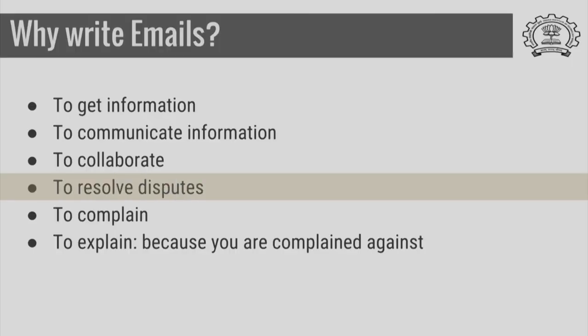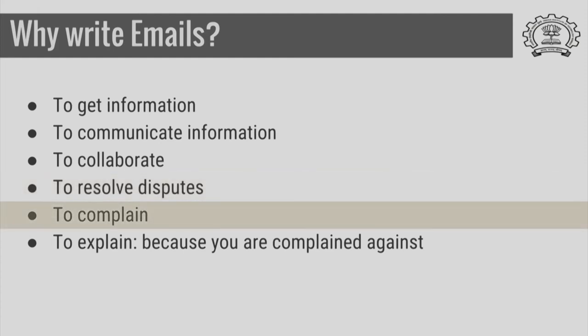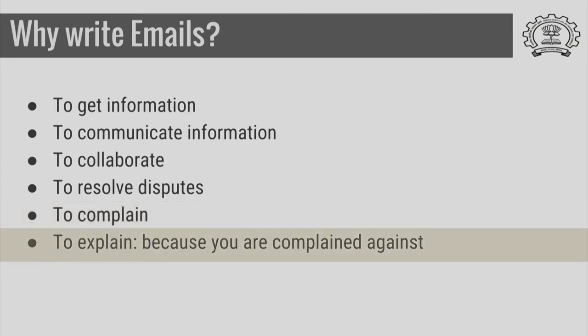Sometimes you write to resolve disputes. Somebody is unhappy about something and you are trying to resolve the issue; somebody might be writing to complain to you and you are responding to a complaint. It becomes harder and harder to write emails that involve resolving disputes, complaining, or explaining when a complaint is against you. It is of course easier to write when you are trying to get some information, and straightforward to communicate information. Collaboration is somewhere in between — sometimes it is difficult to collaborate certain ideas over email, and at that point you may need to use Skype, but the majority of things can be done over email.